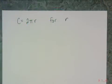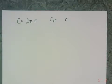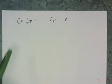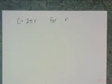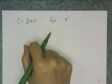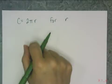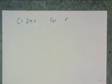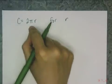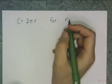Here's another formula you should recognize: c equals 2πr. This is the circumference formula for a circle, and I want to solve it for r. I chose this example because I want you to see that you can get rid of multiple things at the same time. I have 2π times r, and I want to get r by itself.